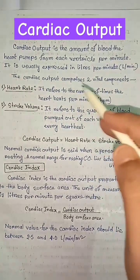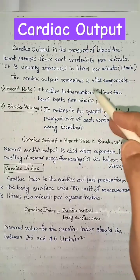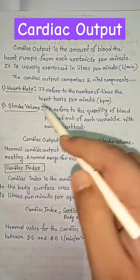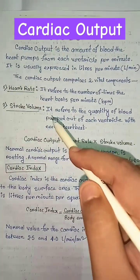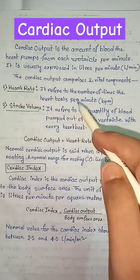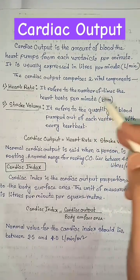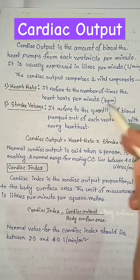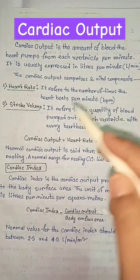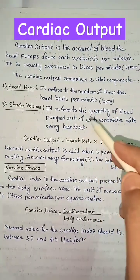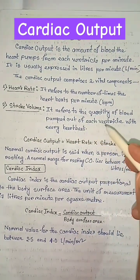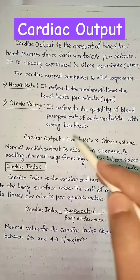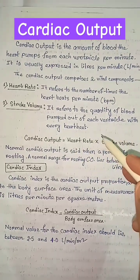The cardiac output comprises two vital components: heart rate and stroke volume. Heart rate refers to the number of times the heart beats per minute. Stroke volume refers to the quantity of blood pumped out of each ventricle with every heartbeat.